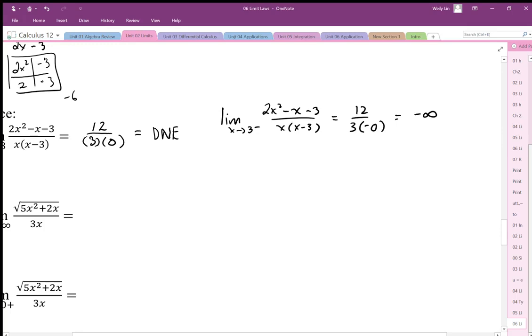If I were to do this from the other side—2x² - x - 3 over x(x - 3)—and I'm still going to plug in the 3, I'm still going to get 12, I'm still going to get 3 here, but now I'm going to approach the 3 from the positive side. So for example, 3.1 minus 3 is a positive number, so I'm going to be dividing by positive 0, which is positive infinity.